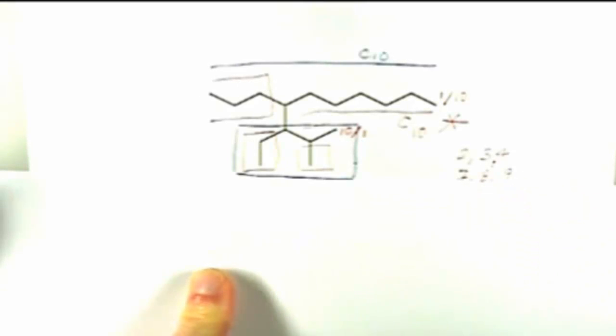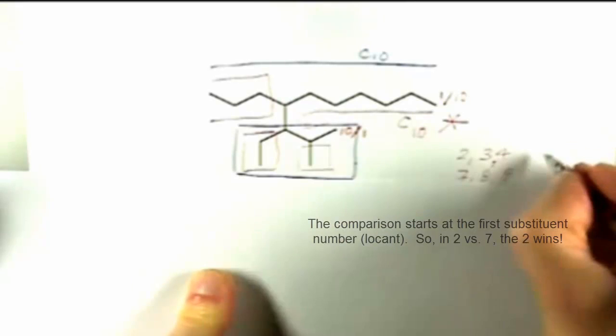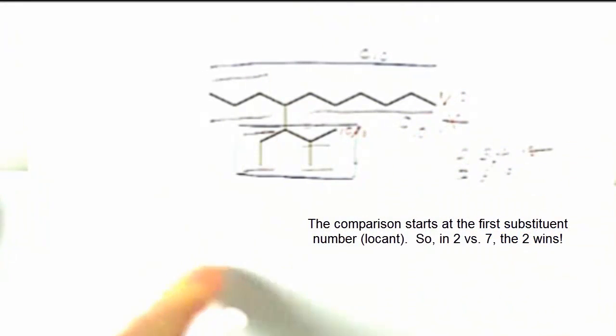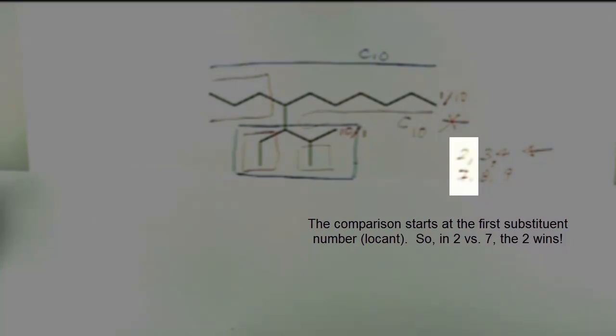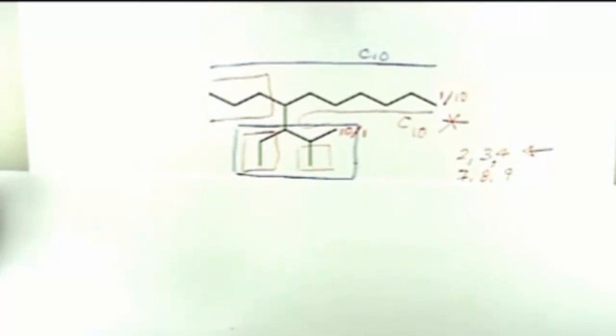So your numbering possibilities are 2, 3, 4, or 7, 8, 9. So that's pretty obvious which one you choose. And now all you have to do is put together the name.